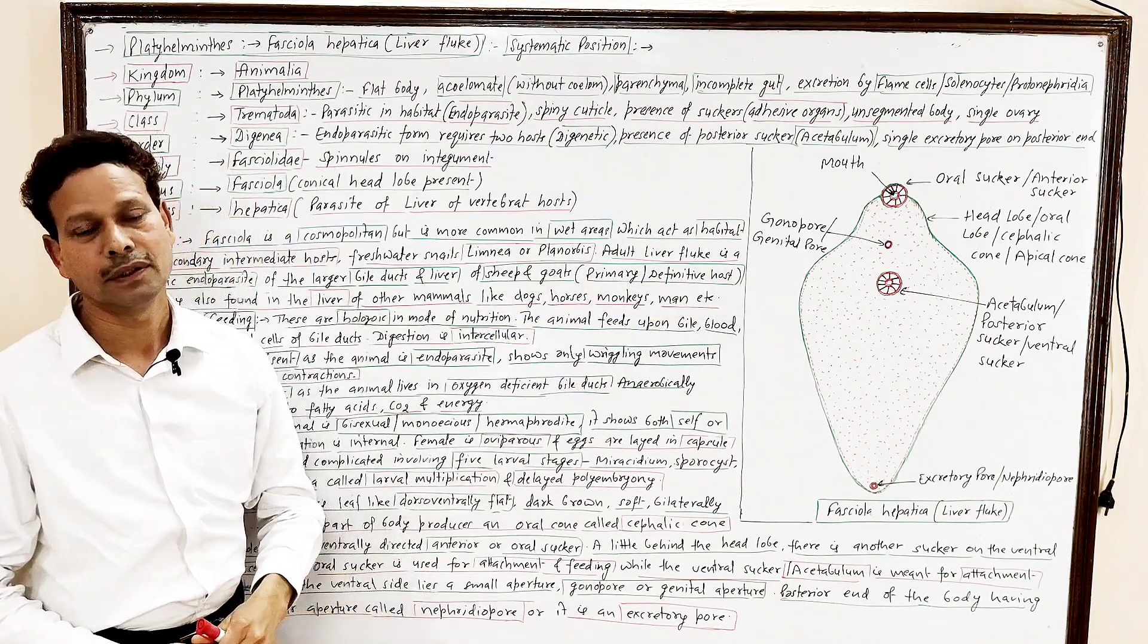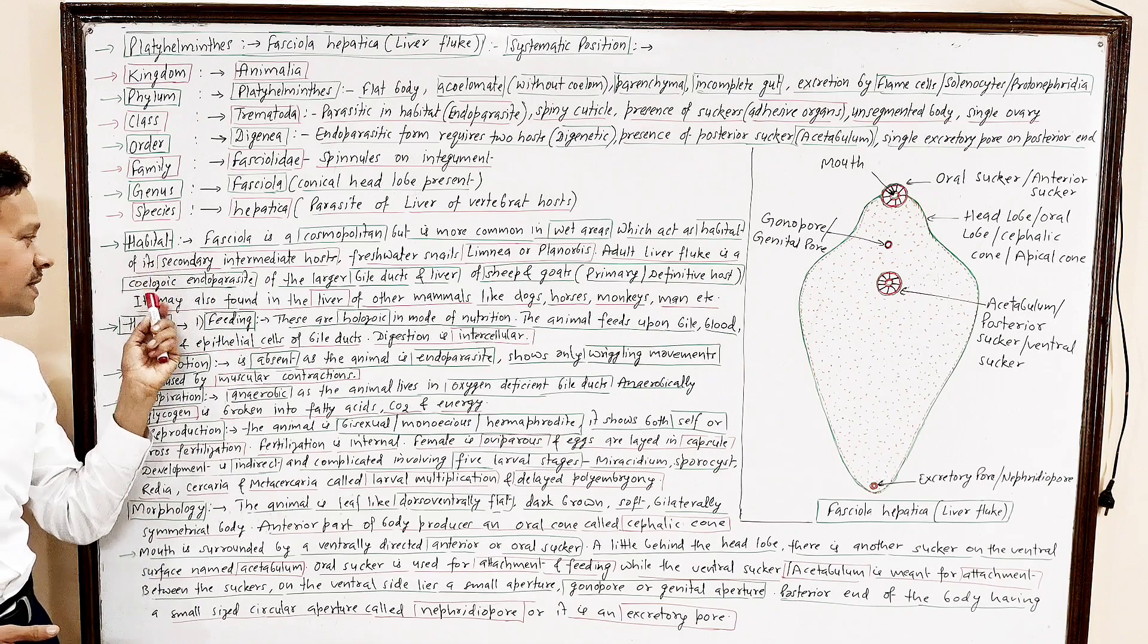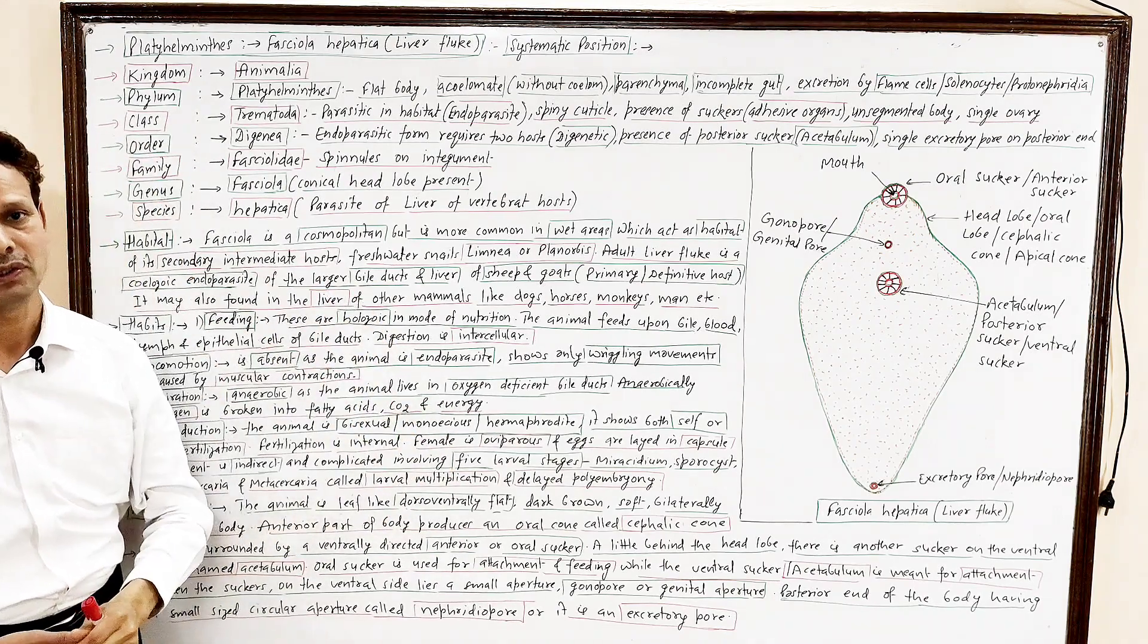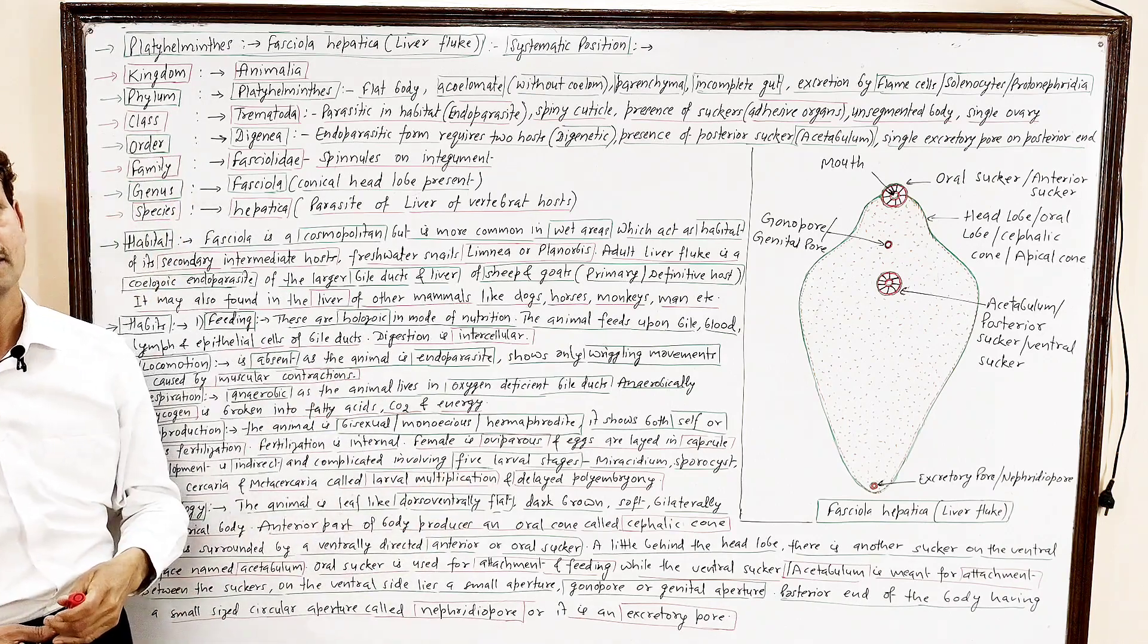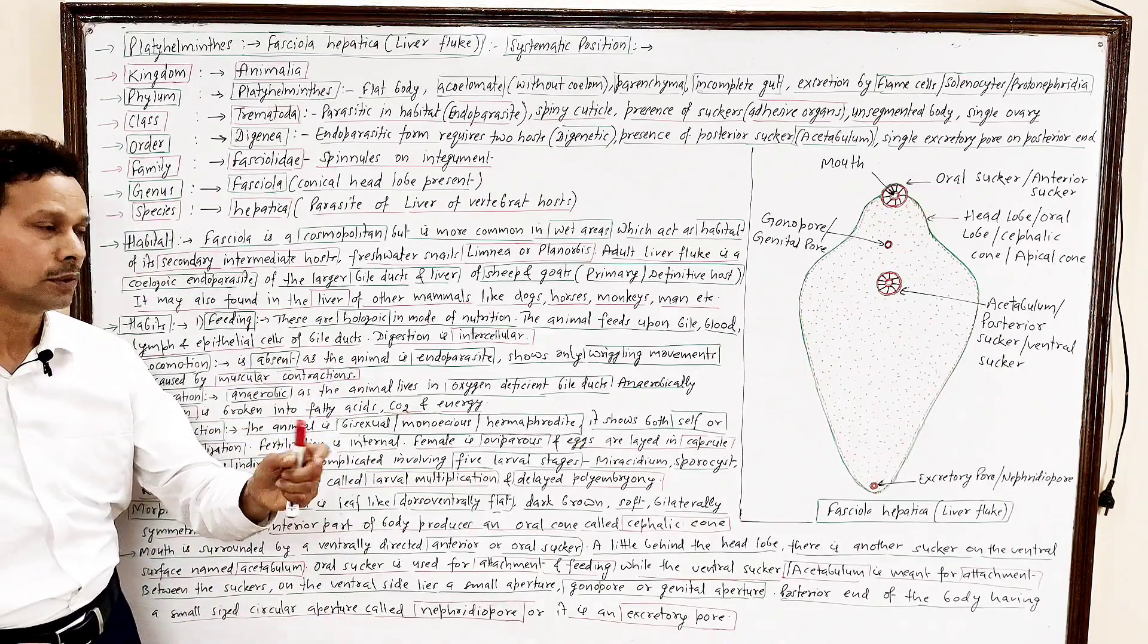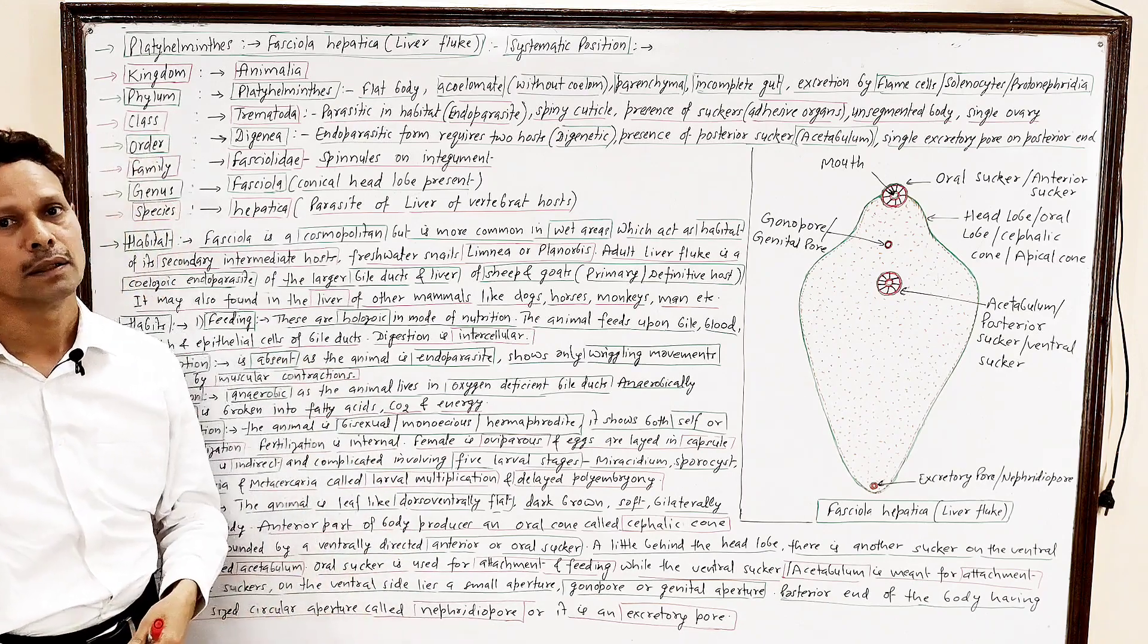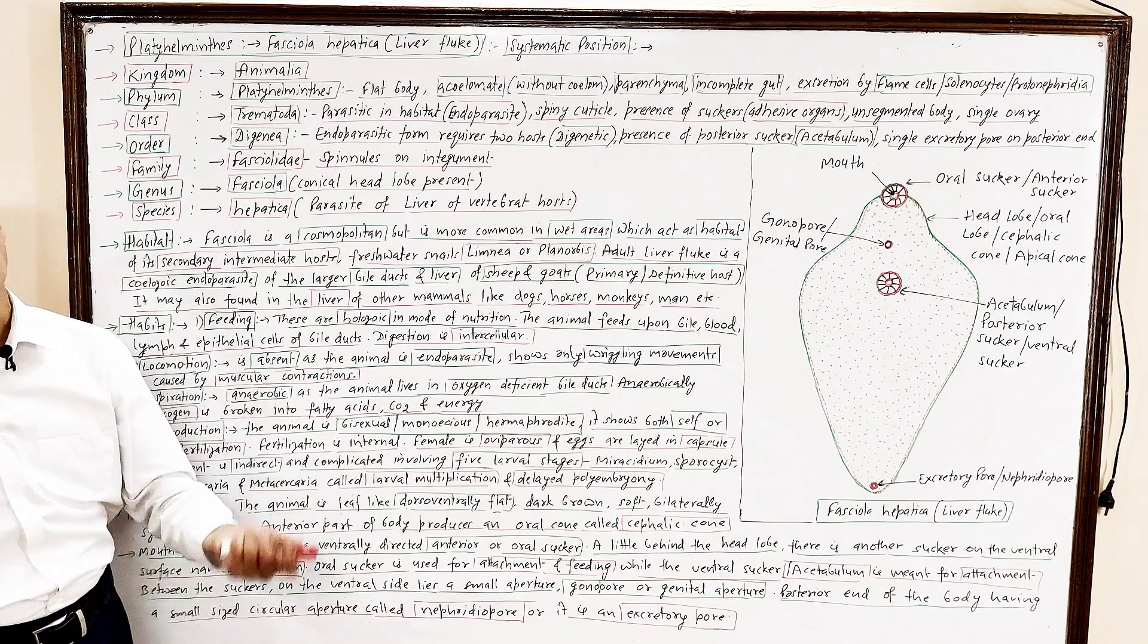Adult liver fluke. Dear students, it is adult form, and that adult form is coelozoic endoparasite. Coelozoic endoparasite, it means the adult liver fluke is found in large sized coelomic ducts, like bile ducts of liver, commonly in the liver of sheep, goats, some other animals like horse, like dogs, like monkeys, man, elephant also.